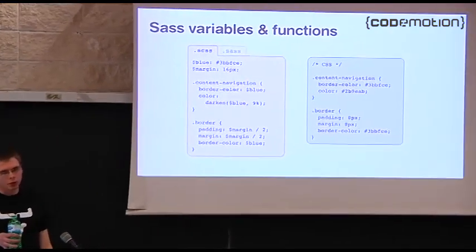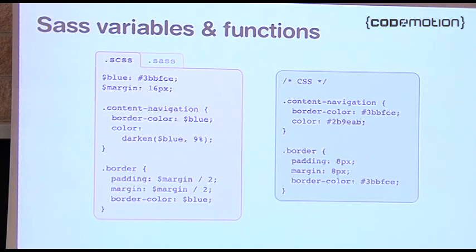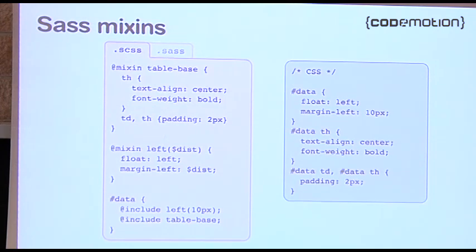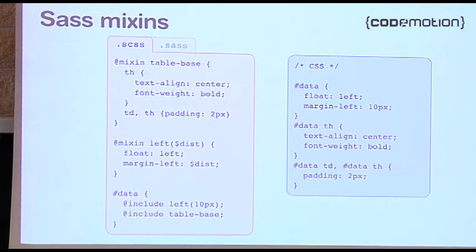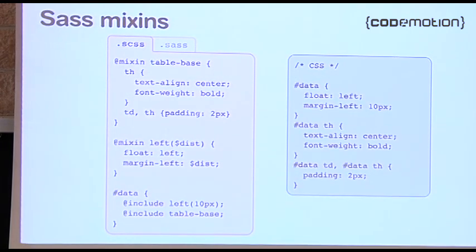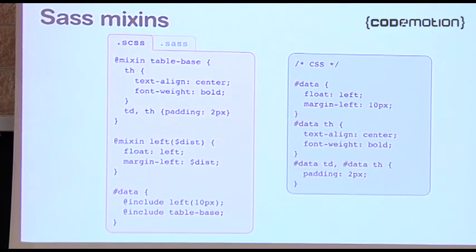You can also use functions in SASS. For instance, the darken function takes the blue variable and makes it 9% darker, and that's what ends up in the output. This gives you much more structure in your themes. SASS also has mix-ins, which let you define blocks of common CSS that you then apply as a whole at some selectors. For example, a 'left' mixin that sets float-left and margin-left with a number of pixels you decide, and then you just write 'include left' and you have float and the margin with just one line of code.